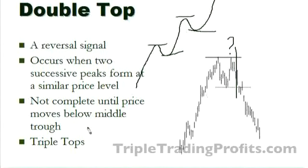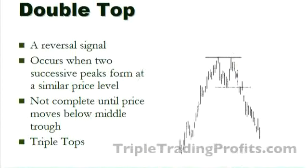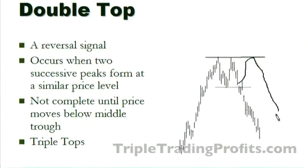We may also see a triple top, where the price trades back up again but again hits a similar peak. Again, if it breaks down through, it's a classic reversal signal. Why is the price failing to move higher? One of two reasons, or a combination: there's too much supply, and not enough buyers prepared to support the price moving higher.